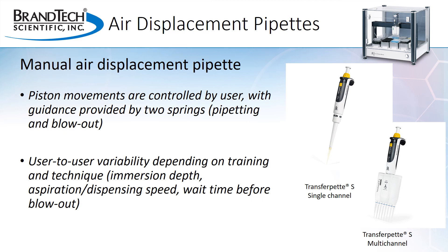Air displacement pipettes can be either manually or electronically operated. Manual pipettes, such as the TransferPet S, are available in both single and multi-channel models. Single-channel pipettes can be fixed or variable volume and can range from 0.1 microliter to 10 mils. Multi-channel pipettes, most commonly 8 and 12 channel, though other sizes are available for specialized applications, generally range in variable volumes from 0.5 microliters to 300 microliters. With manual air displacement pipettes, the piston movements are controlled by the user. The pipetting stroke has two stops. In standard or forward pipetting, the first stop is for aspirating and dispensing, and the second for blowout.